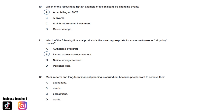Question twelve: Medium term and long term financial planning is carried out because people want to achieve their: A. Aspirations. B. Needs. C. Perceptions. Or D. Wants. And the answer is A. Aspirations.